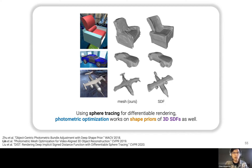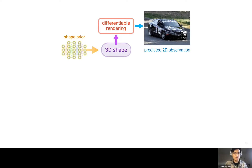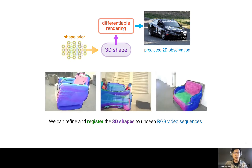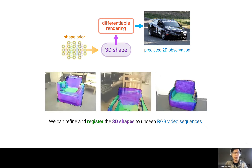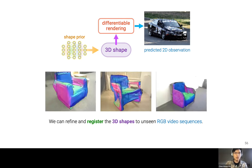This framework is applicable to other 3D representations and differentiable rendering methods as well. Follow-up works using SDF as the representation produce higher-quality 3D shape reconstruction, and it would be natural to integrate different SDF shape priors — such as the SDF-SRN prior trained on real-world images — into this photometric optimization pipeline. We've seen how shape priors can be learned at scale from single image collections in training, and applied at inference to refine and register 3D object shapes to unseen videos.